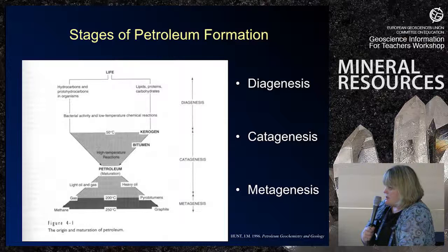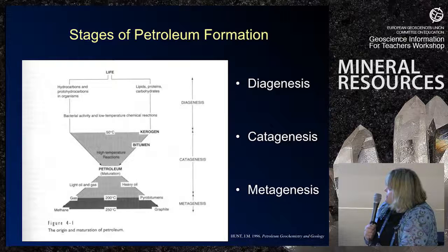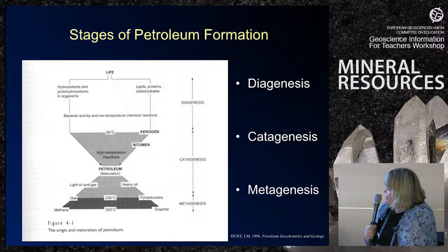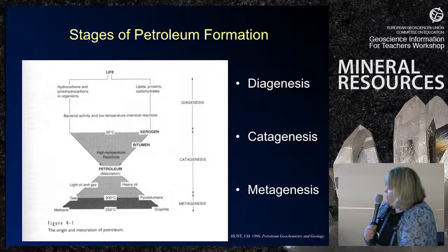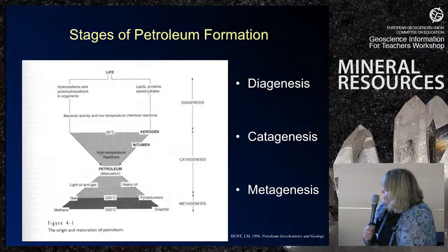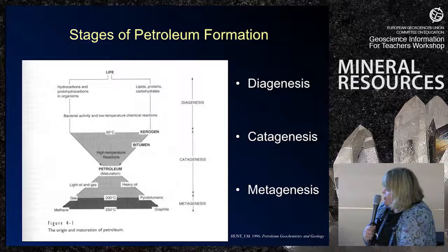In regards to petroleum formation, we have life, and the lipids, proteins, carbohydrates, et cetera, through the early stages of diagenesis give rise to a very complex macromolecule called kerogen, which is very insoluble in common organic solvents, and a bitumen-type material. This kerogen is the precursor for oil and gas with increasing temperature. We get oil and gas in catagenesis stage, and in metagenesis at much higher temperatures — in the order of 200 degrees C — we might get pyrobitumen and gas. At very extreme temperatures, we get graphite.